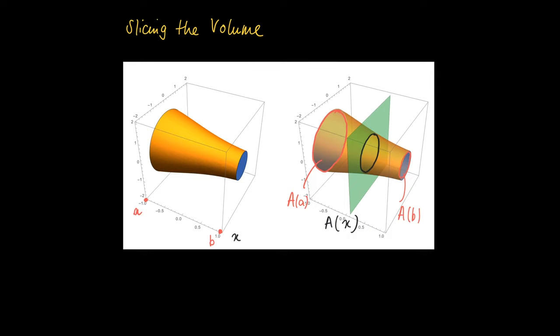We use rectangles to form an estimate of the area enclosed by those two functions. Here we use the same idea for volumes. So we are going to slice up the volume and approximate it using cylindrical shells, which we discussed in the former clip.